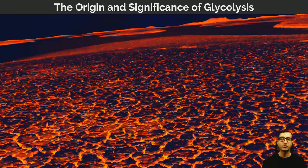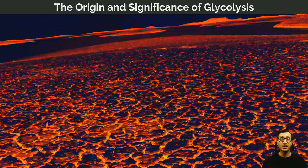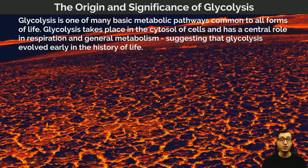Glycolysis is one of many basic metabolic pathways which is common to all living organisms. It takes place in the cytoplasm — the cytosol of cells — and it has a central role in respiration but also in general metabolism. This suggests that glycolysis evolved early in the history of life because it is common to all living organisms.